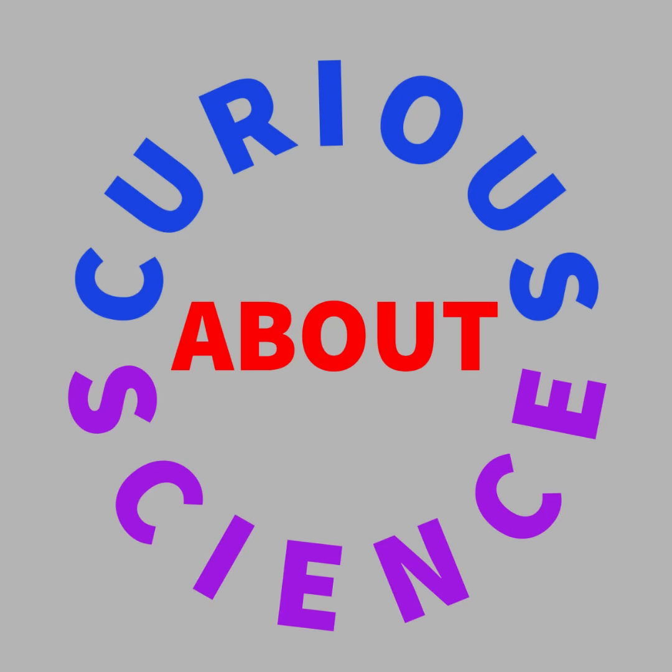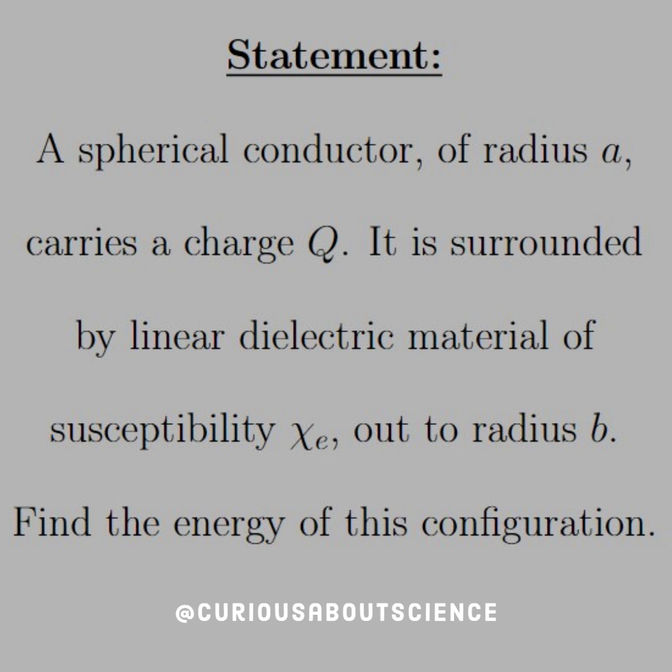Hello and welcome back curious people. Our statement today reads, a spherical conductor of radius A carries a charge Q. It is surrounded by a linear dielectric material of susceptibility chi E out to radius B. Find the energy of this configuration.